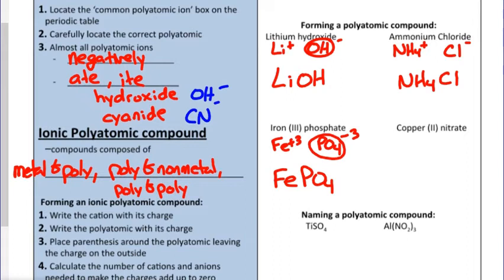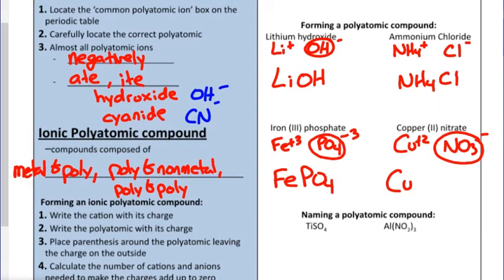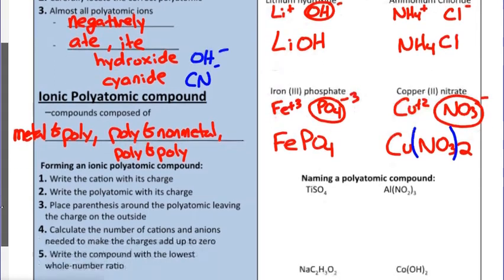What if we need multiple polyatomic ions? For copper(II) nitrate: copper is a plus two transition metal with Roman numeral two. The nitrate ion is NO3, and each NO3 group has a negative one charge. To get charges adding to zero, we need multiple negative ones to cancel the plus two. We use parentheses — writing (NO3)2 — because writing NO32 would look like one nitrogen and 32 oxygens, which is impossible.